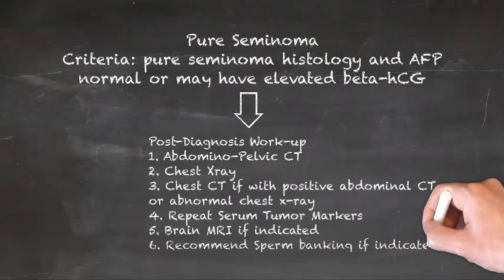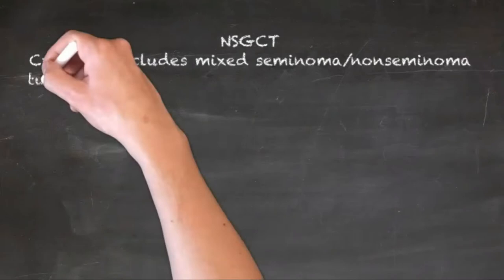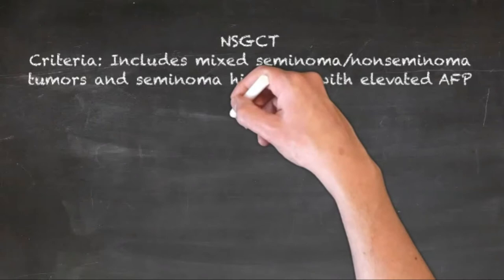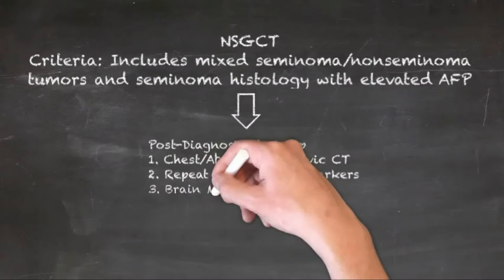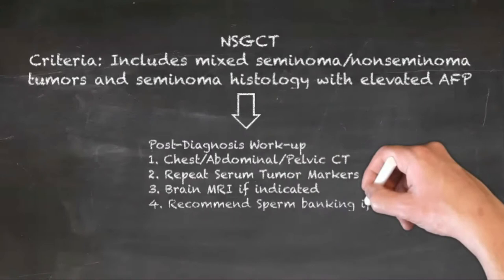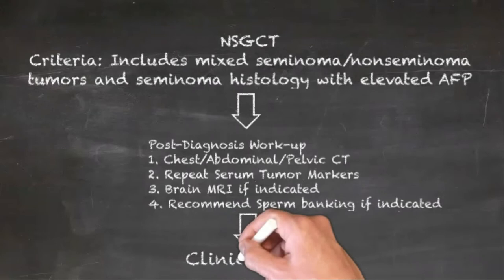In patients with clinical stage 1 seminoma, clinicians should preferentially obtain a chest x-ray over a CT scan. In patients with non-seminomatous germ cell tumor, clinicians may preferentially obtain a CT scan of the chest over a chest x-ray and should prioritize CT chest for those patients recommended to receive adjuvant therapy. In patients with newly diagnosed GCT, clinicians should obtain a PET scan for staging. Patients should be assigned a TNM category to guide management decisions.